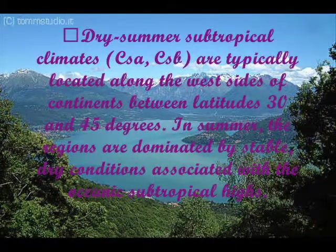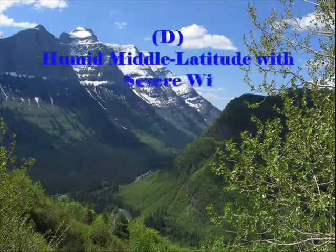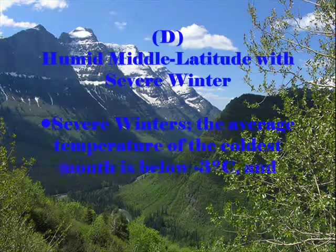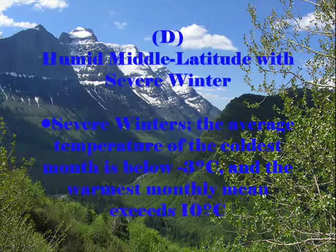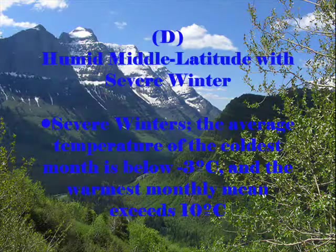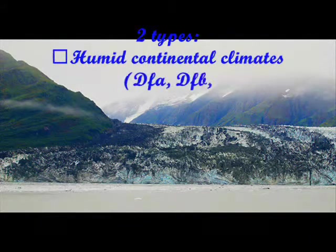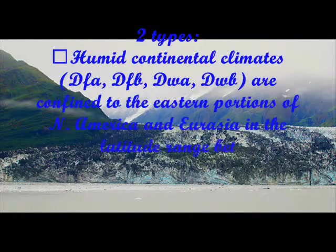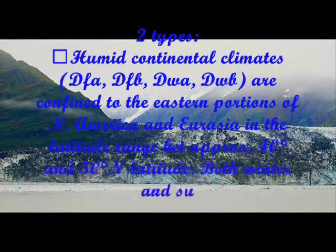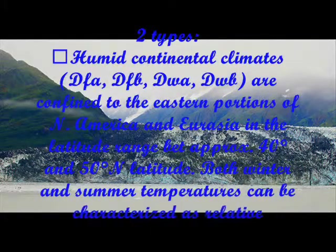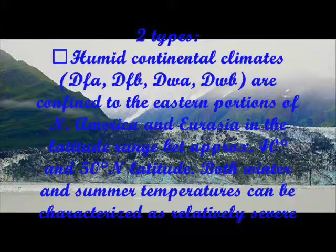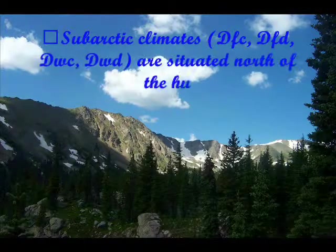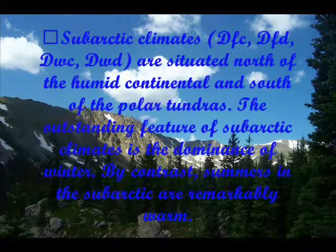The next is the humid middle latitude with severe winter climate. Severe winter means the average temperature of the coldest month is below negative 3 degrees Celsius and the warmest monthly mean exceeds 10 degrees Celsius. Two types are: humid continental climates, confined to the eastern portions of North America and Eurasia in the latitude range between approximately 40 and 50 degrees north, where both winter and summer temperatures can be characterized as relatively severe. Then, subarctic climates, situated north of the humid continental climates, where summers are remarkably warm.